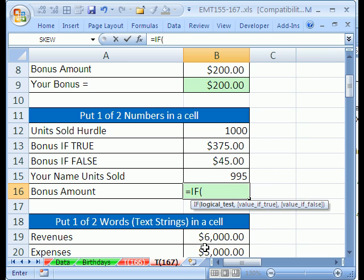Equals IF. Logical test is your sales greater than or equal to, because we have a nice boss. Greater than or equal to the hurdle. That's the logical test. Value if true. If that's true, we get 375. Comma, value if false, 45. Enter.